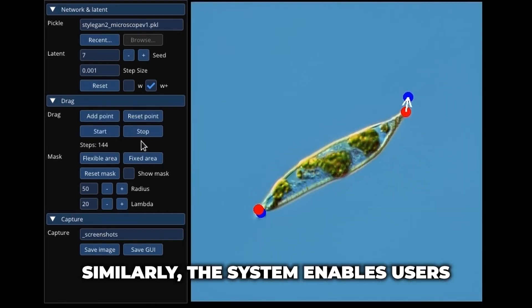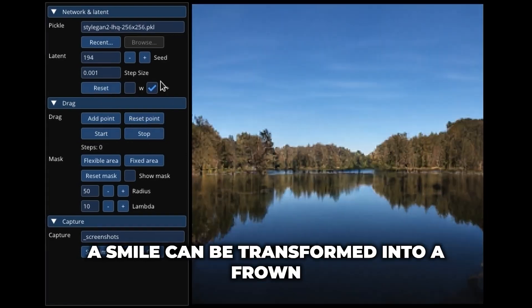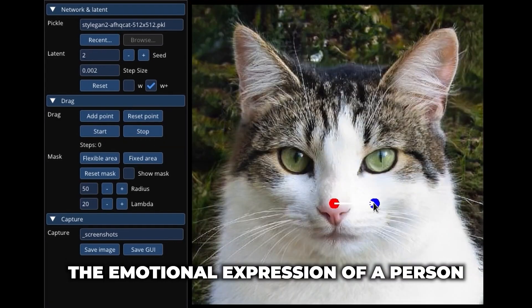Similarly, the system enables users to manipulate facial expressions. A smile can be transformed into a frown by dragging the corners of the mouth, showcasing the system's ability to modify the emotional expression of a person in an image.